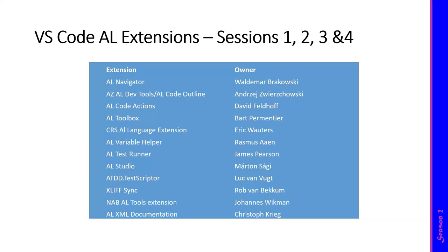I reserve some room to show all the extensions that are part of this series. This planning shows the order of sessions — we're halfway. James, Martin's, and my extension will be presented today. Next week we'll have the last session showing extensions from Rob, Johannes, and Christoph. There are a couple of others — for example from Stefan Maron — who might be presenting the AL Linter somewhat later.